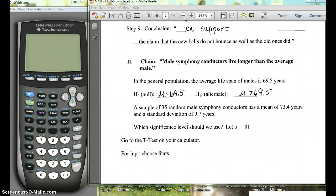So we're given some sample information. A sample of 35 random male symphony conductors has a mean of 73.4 years and a standard deviation of 9.7 years.